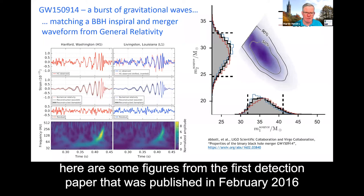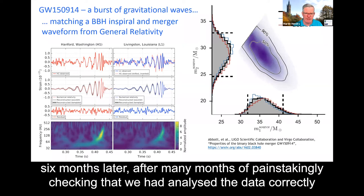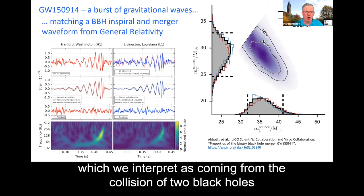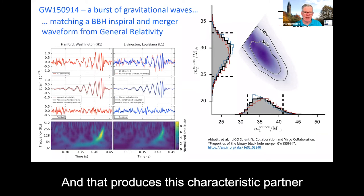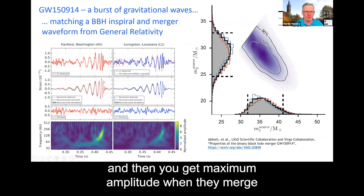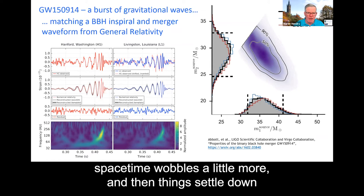And to be a bit more specific about some of that, here are some figures from the first detection paper that was published in February 2016, six months later, after many months of painstakingly checking that we had analysed the data correctly. So what we see is what's known as the inspiral merger and ringdown signal, which we interpret as coming from the collision of two black holes, just like we saw on the previous cartoon. And that produces this characteristic pattern where the frequency increases up to the merger of the black holes, and then you get maximum amplitude when they merge, and then the signal fades away, spacetime wobbles a little more, and then things settle down.